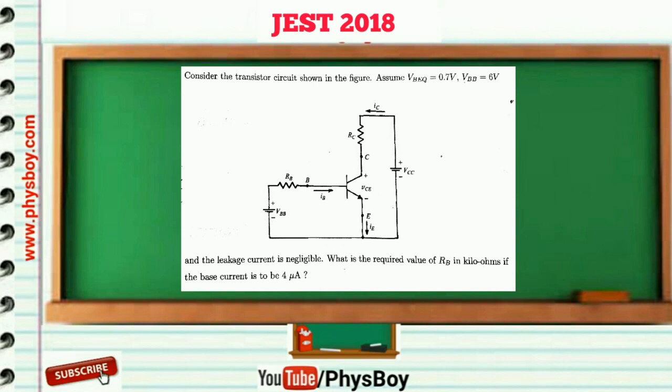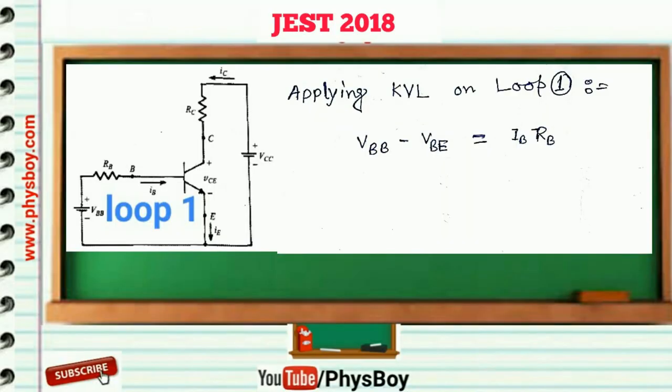Let us first consider this is loop 1. Now on this loop you have to apply KVL. By applying KVL you will get VBB minus VBE is equal to IB times RB.